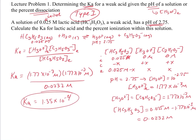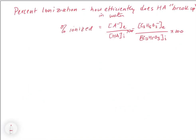Now there is one thing we have to look at: what is percent ionization and how do we work with it? Percent ionization is a measurement of how efficiently the weak acid breaks up in water. We start out with a certain amount of HA — say one molar. If it breaks up and we get 0.5 molar A-, that means about half of it broke up, so about 50 percent of the HA broke up in water. So we use the concentration of the conjugate base at equilibrium divided by the initial concentration of the acid, times 100. That percentage is a good indicator of percent ionization.